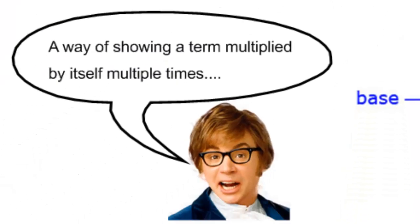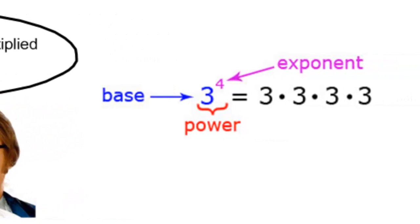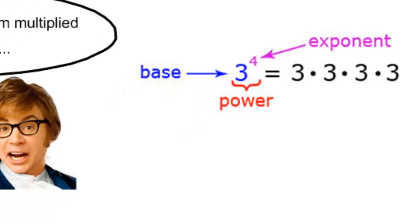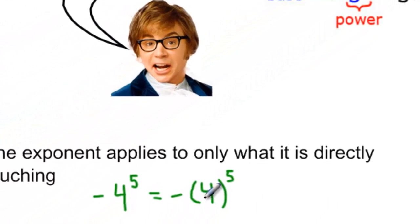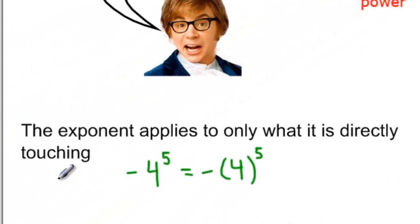So in summary, in this video we talked about how powers are a way of showing that a term is multiplied by itself many times. The power can be broken up into two pieces: the base and the exponent. The exponent tells you how many times you multiply the base by itself. And the last main point is that the exponent applies to only what it is directly touching.